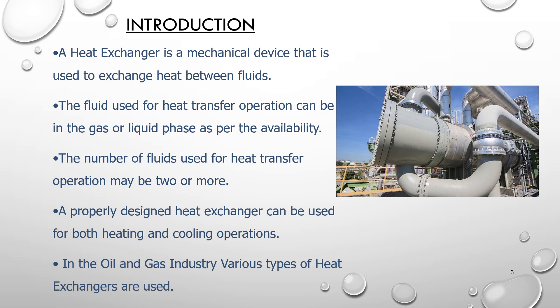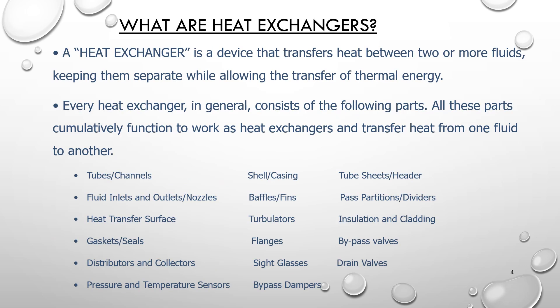In the oil and gas industry, various types of heat exchangers are used. A heat exchanger is formally defined as a device that transfers heat between two or more fluids, keeping them separate while allowing the transfer of thermal energy. The fluids do not mix with each other — they remain separated inside chambers. One will be in the shell part, the other in the channel or tube part. They simply transfer heat from one to another; the hot fluid transfers heat to the cold fluid.